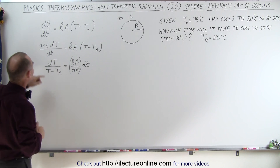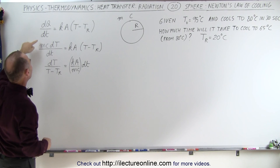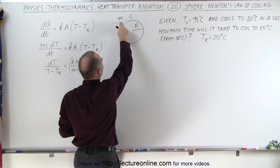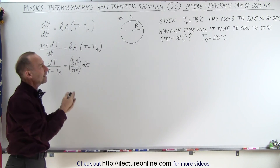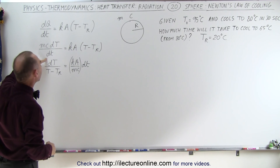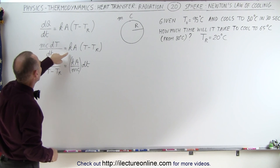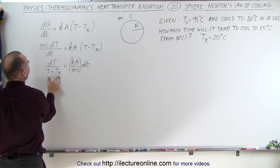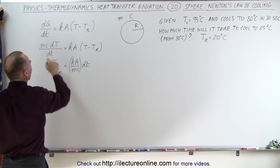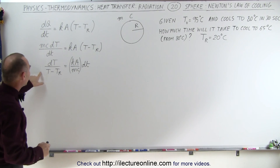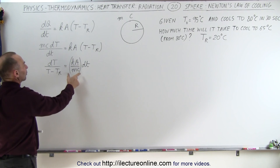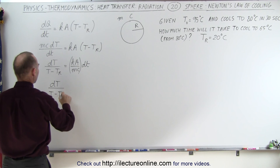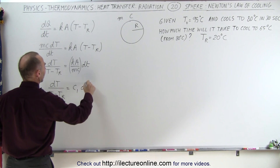Let's do that. We're going to replace dQ with mc dT, because the object has a finite amount of heat — it starts with an initial temperature, it has a mass and a specific heat. So mc dT will be the amount of heat flowing out of the object. We divide that by dT, and on the right side we have Ka times the difference in temperature between the object and the room. Separating variables, we bring the temperature term to the left side and Ka divided by mc over to the right. To make things simpler, we replace Ka/mc with a constant value, C1. So dT divided by T minus T of the room equals C1 times dT.